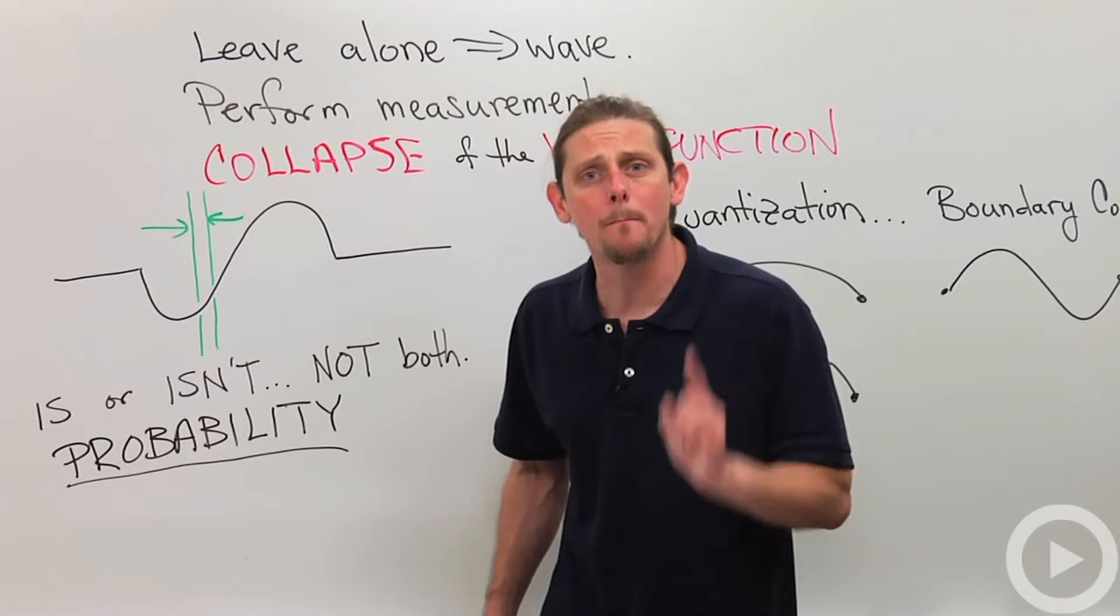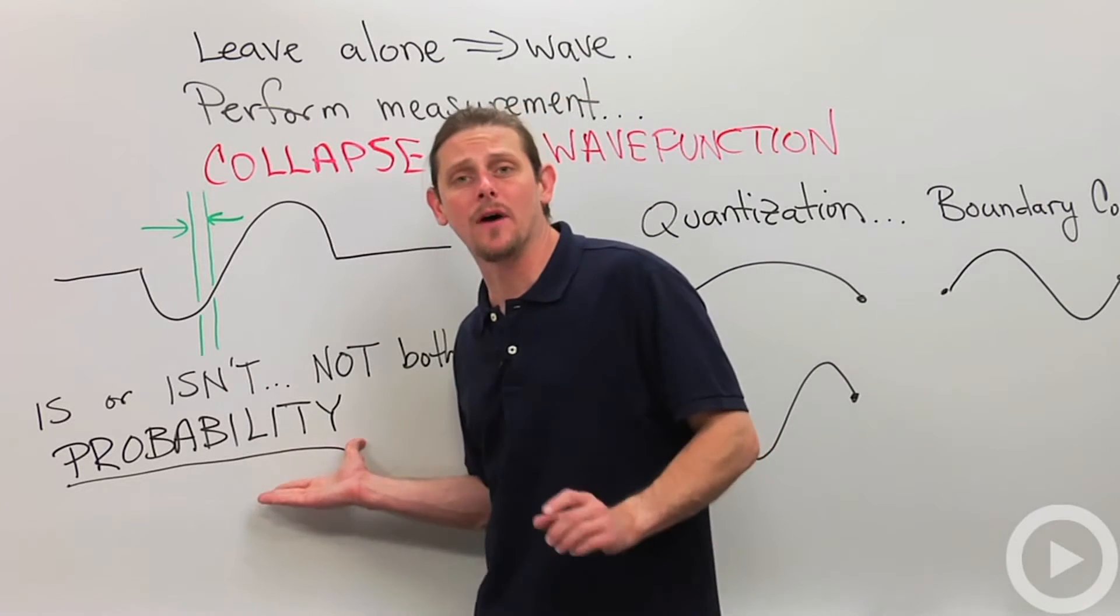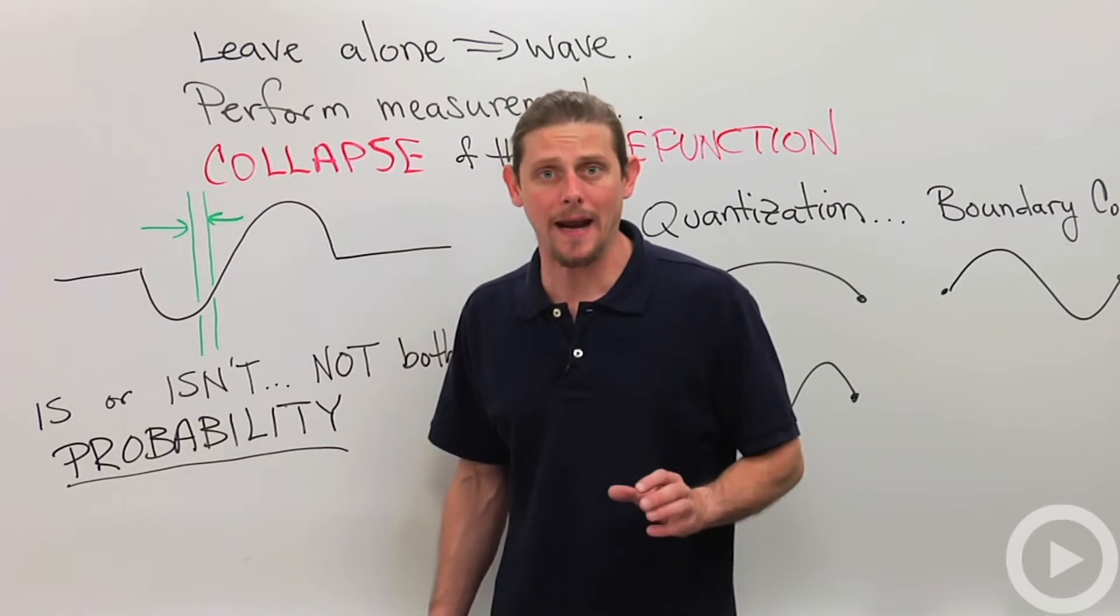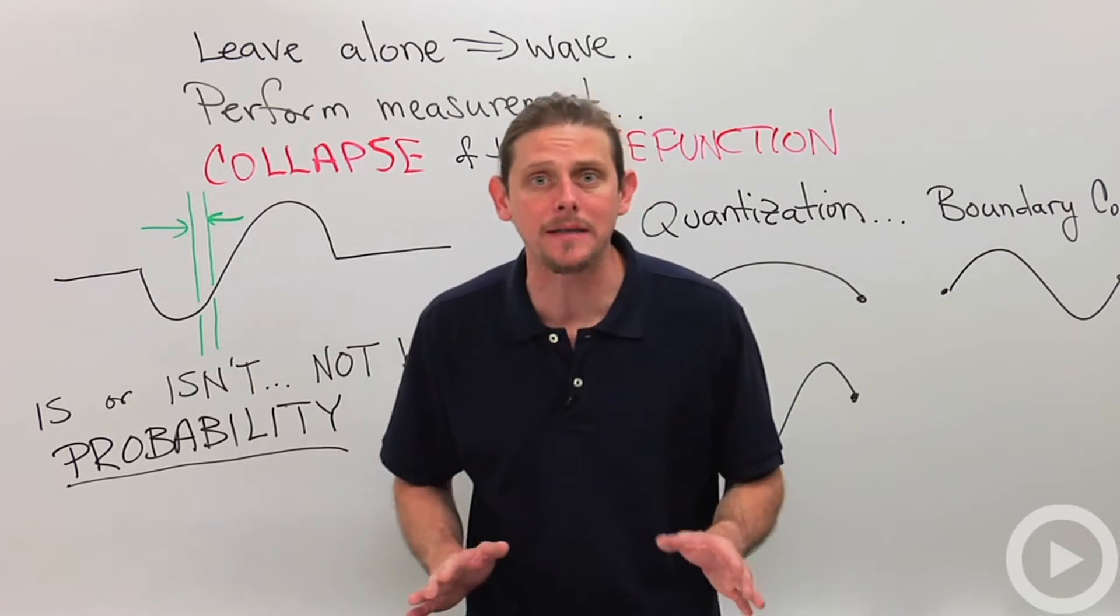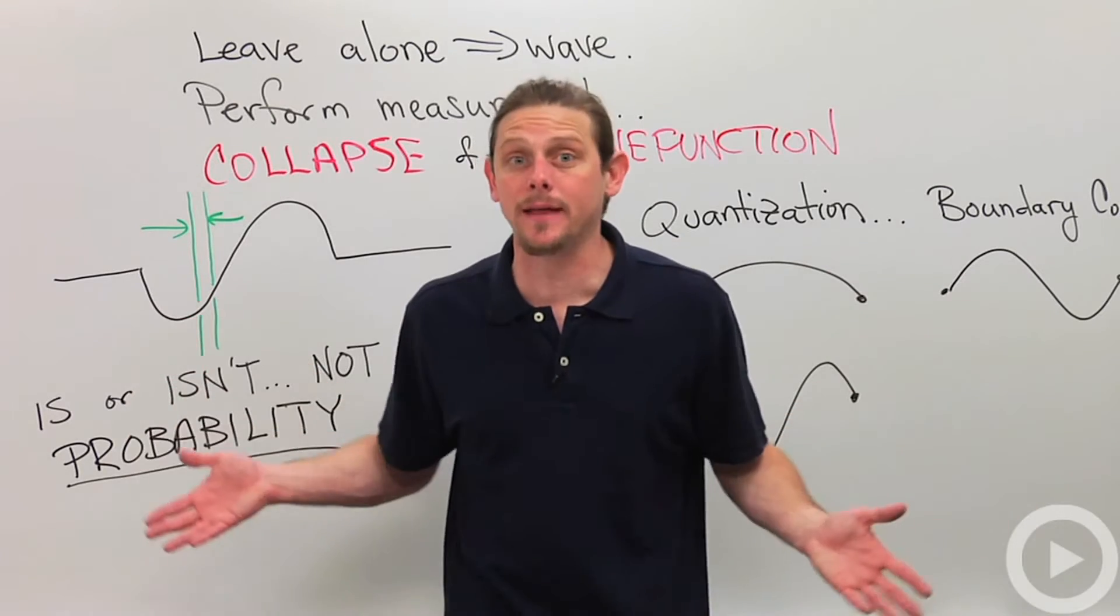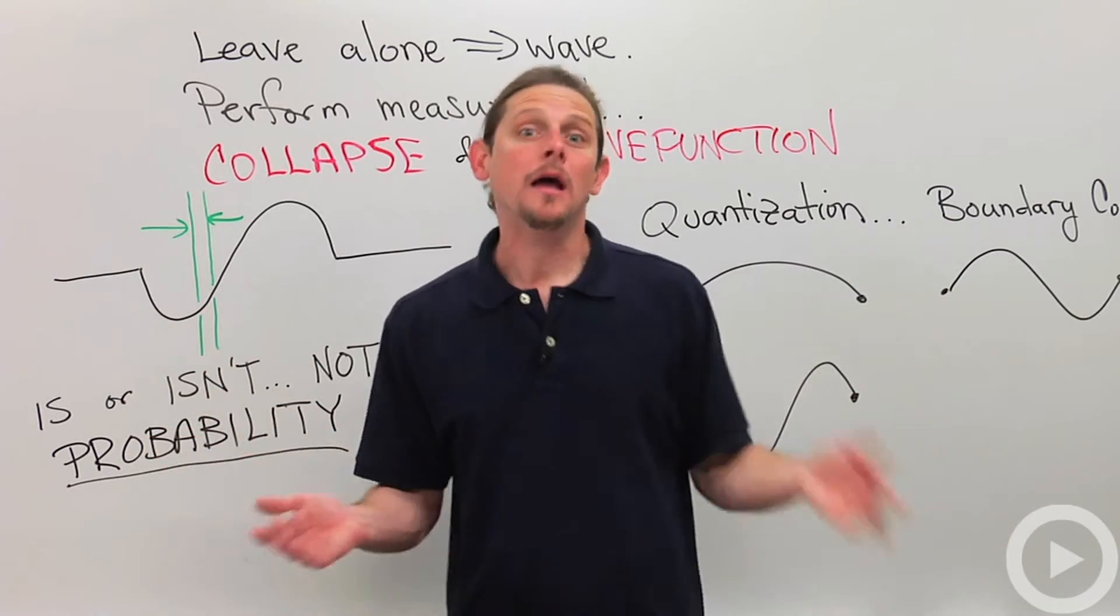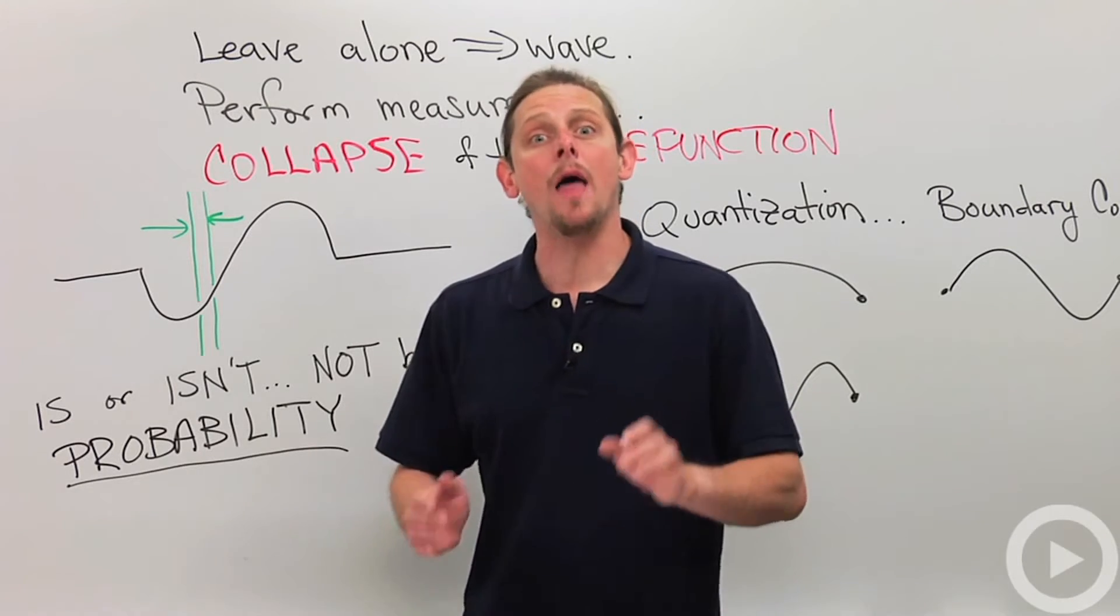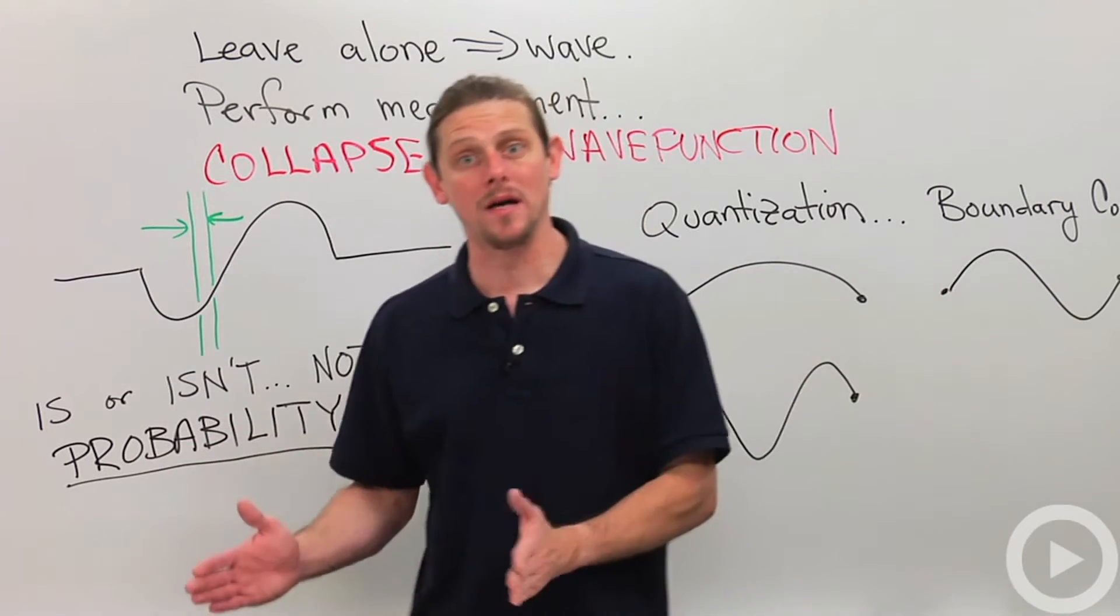It cannot be both. And that is going to give us a probabilistic interpretation from quantum mechanics. So the wave function will give us probabilities. It'll say, all right, if you did that measurement 100 times, six times you're going to find that it was between the green bars, and the other 94 times you're going to find that it wasn't.